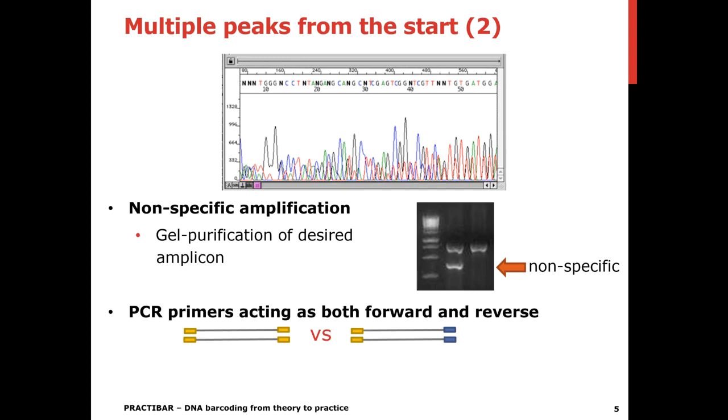Another possibility can be that the PCR primers were acting as both forward and reverse primers. So you have here the forward and the same primer on the other side of your amplicon. If you sequence this with the primer, you get this sequence, but directly you get also this sequence. So then your trace file becomes also messy.